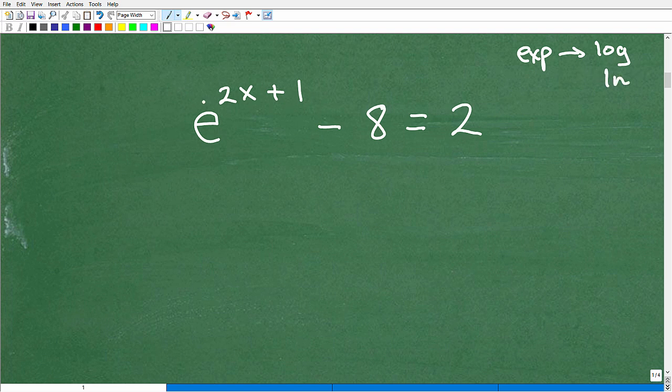But the logarithm that we're going to be using is the ln version. So when you have an exponential equation that specifically involves the base e, you use the ln version, not the log. This is the common log. This is the natural log. We're going to be using ln.